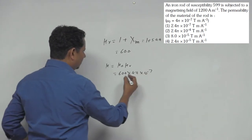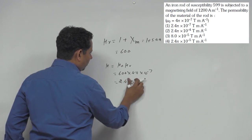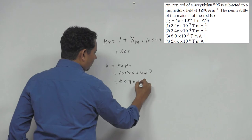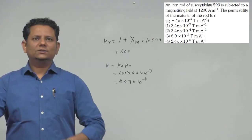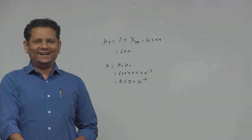When we solve this, it will be equal to 2.4π × 10⁻⁴. So based on this, we can say 2.4π × 10⁻⁴ would be the right answer.